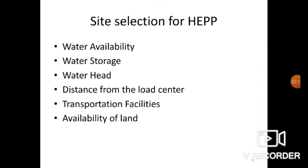Next is water storage. The dam should be located across the river to get a continuous water supply throughout the year, especially in the dry season. Next is water head — a very important point of site selection. Water head is directly related to the cost of generation of electric power. If the effective head is increased, water storage can be reduced.